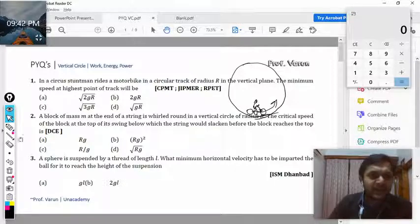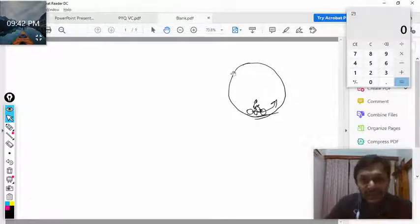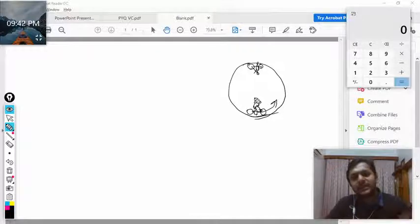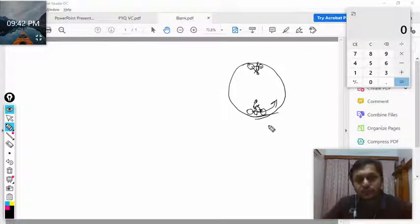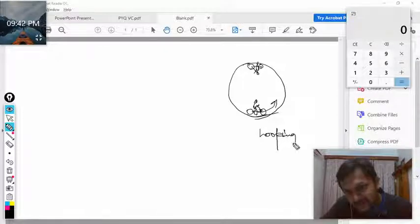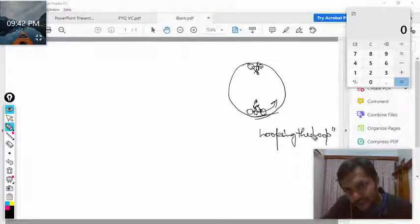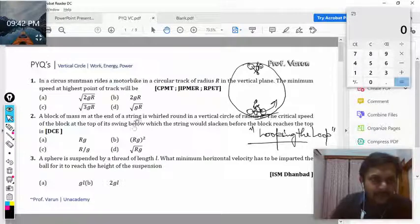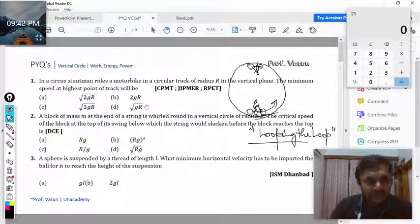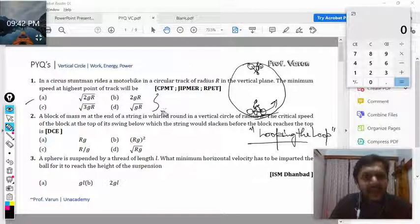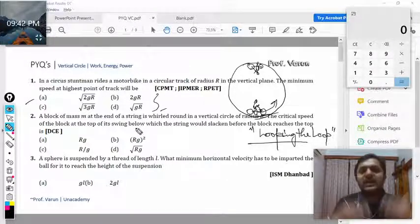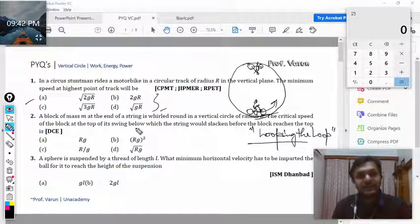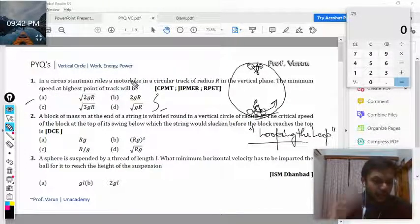Let's go back to the question and read it once again. The minimum speed at the highest point will be? Because he's a stuntman he is doing this exercise, my dear students. This is known as looping the loop, and now we want to find the condition of looping the loop. If you know the answer please comment in the comment section with the answer. Otherwise, if you are not aware I will derive this formula in front of you.